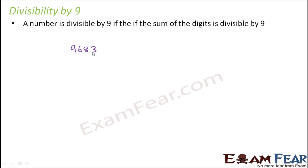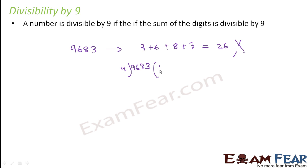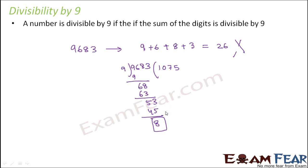Take the number 9683. To check divisibility by 9, find the sum of the digits: 9 + 6 + 8 + 3 = 26, and 26 is not divisible by 9, so 9683 is not divisible by 9. If we verify by actual division, dividing 9683 by 9 gives a remainder of 8, confirming it is not exactly divisible by 9.